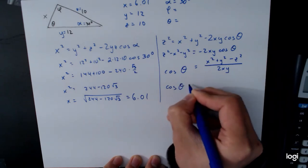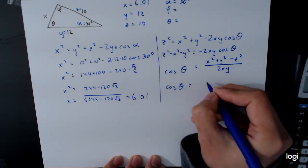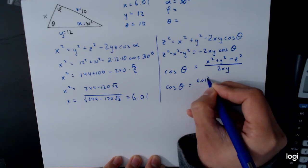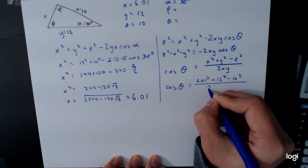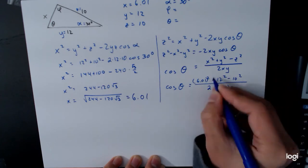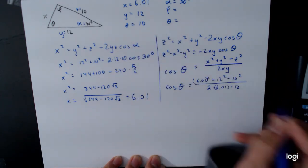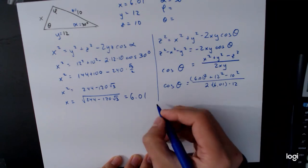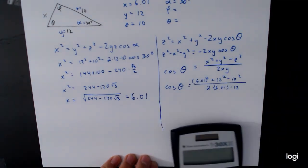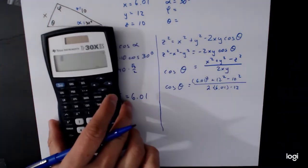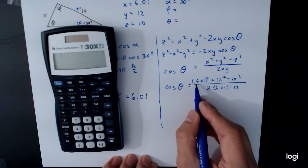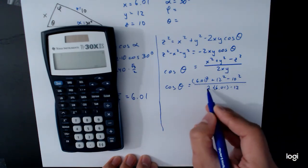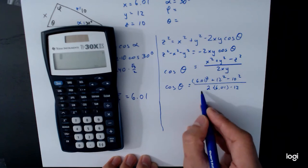And so cosine of theta is equal to x squared, which is going to be 6.01 squared plus y squared, which is 12 squared minus 10 squared over 2 times 6.01 times y, which is 12. One thing that happens here is that a lot of students make the mistake when they type this into their calculators. Depending on your calculator, you may or may not have parentheses. If you're not careful with how you set this up, you can actually type it in in such a way that this division doesn't apply to the whole fraction, but only the denominator.